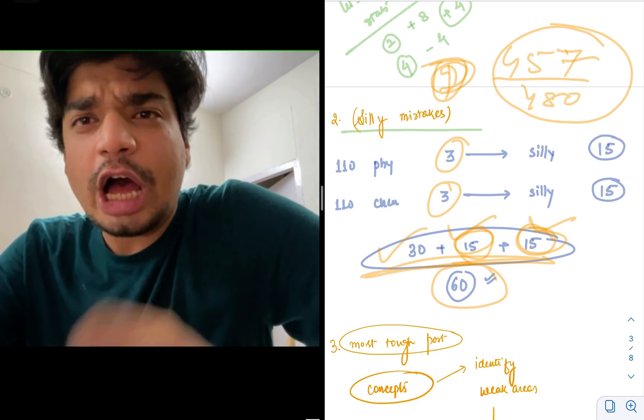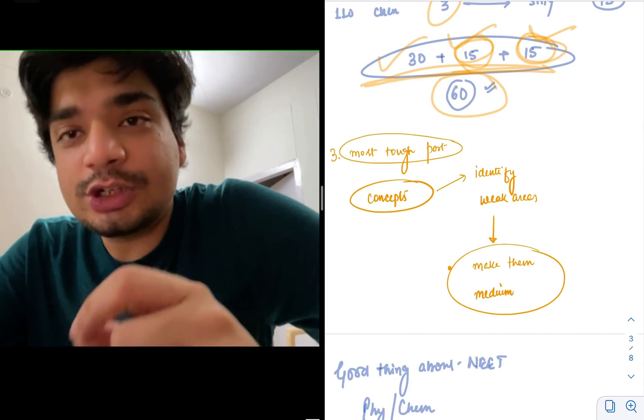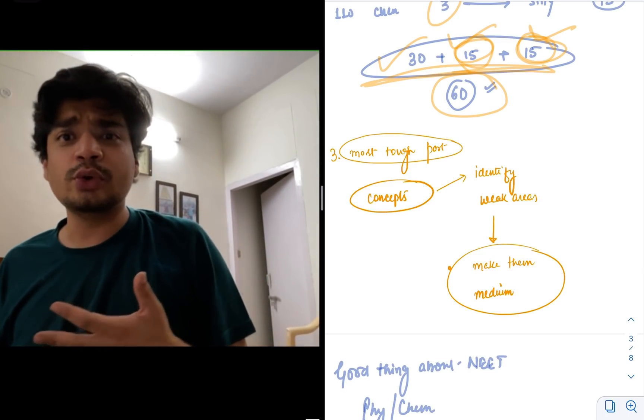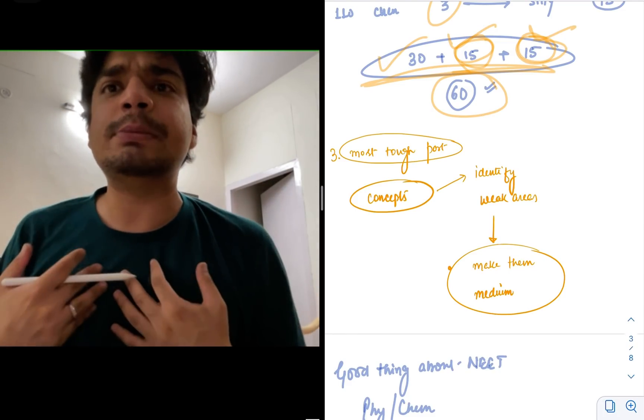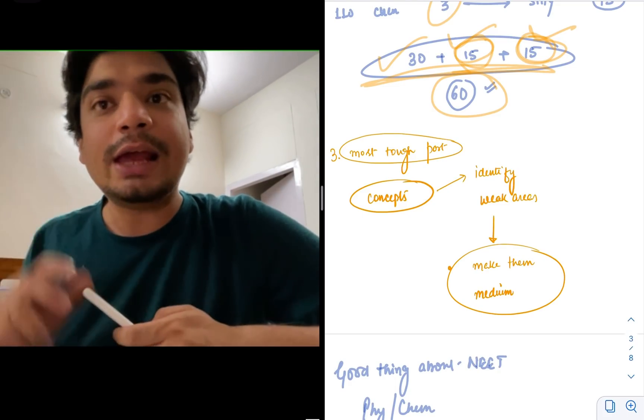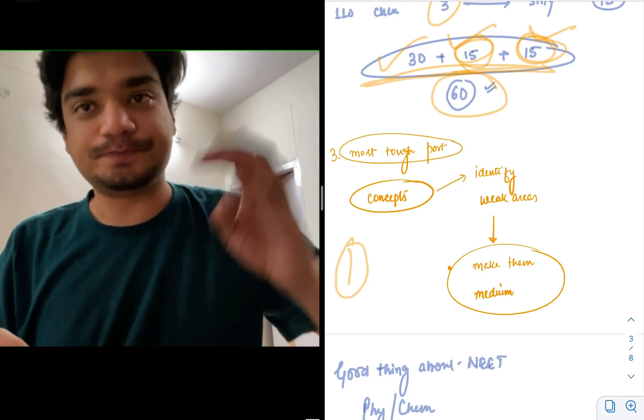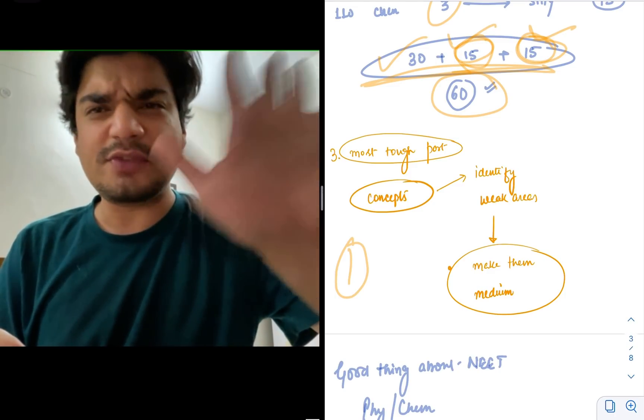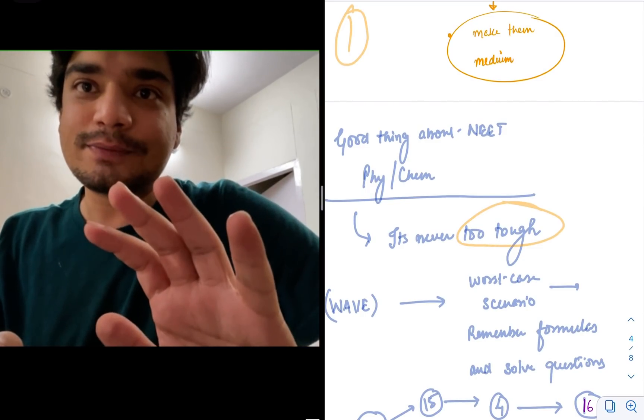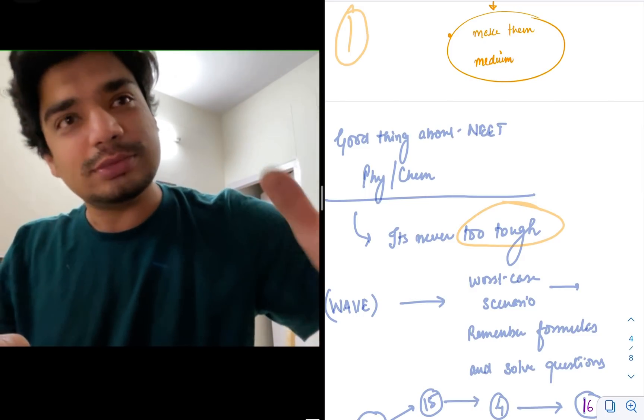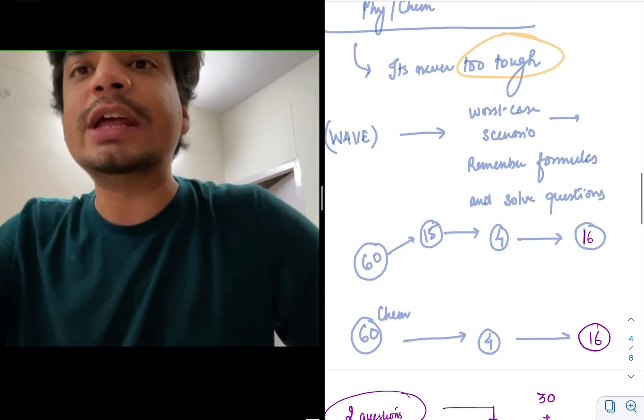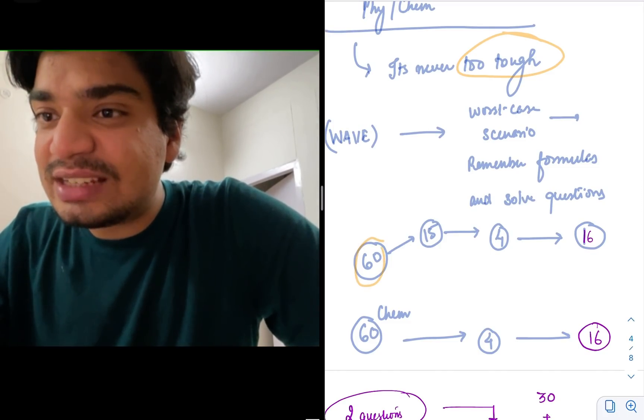Now comes the tough part. How to get those 40 extra marks? Here the concept comes that you have to make your concepts strong. But how to make your concepts strong? First identify your weak areas. Everyone has weak areas. I am not talking about a subject, I am talking about the topics in a subject. For example, in my case, in physics, rotational mechanics was very weak. My waves was very weak and my simple harmonic motions were very weak. One thing good about NEET physics and chemistry is it's never too tough. So, what's the worst case scenario which I did? Formulate it. Just remember the formulas and practice 5 to 10 years questions.